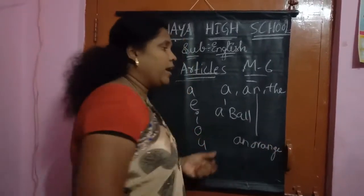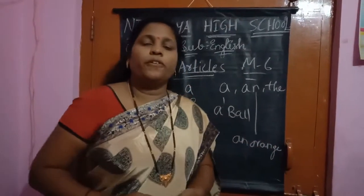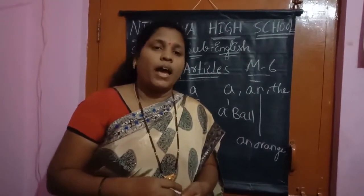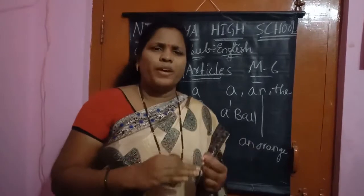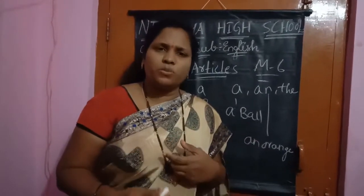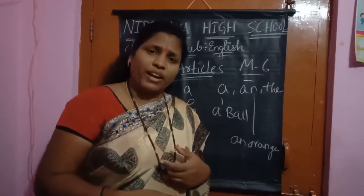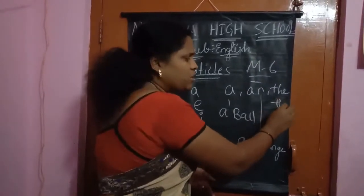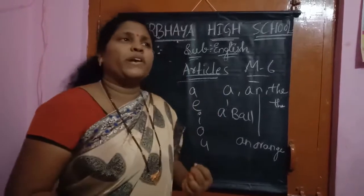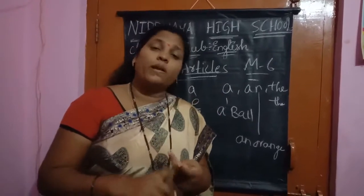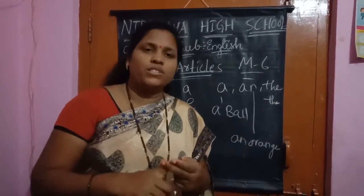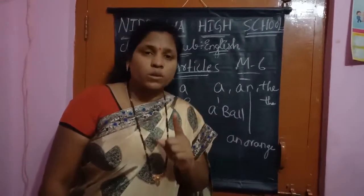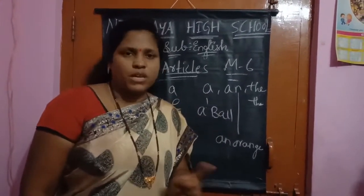And The is used before rivers, seas, mountains, and names. Also, when we have already mentioned about one person and are going to mention about that person again, we use The. The is pronounced as 'the' and also pronounced as 'thee'. A and AN are used before singular words only, not for plural forms. Understood, children? This is about your articles — A and The are articles.